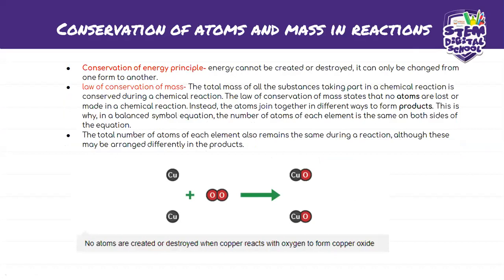Moving on to the conservation of atoms and mass in reactions. We've already spoken about the conservation of energy principle. Now, the law of conservation of mass states that the total mass of all substances taking part in a chemical reaction is conserved. No atoms are lost or made in a chemical reaction — instead, atoms join together in different ways to form products. That is why in a balanced symbol equation, the number of atoms of each element is the same on both sides.